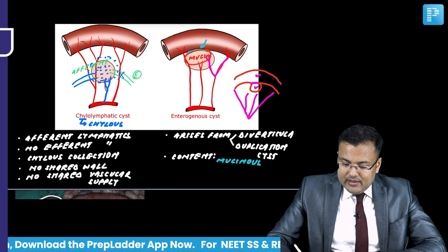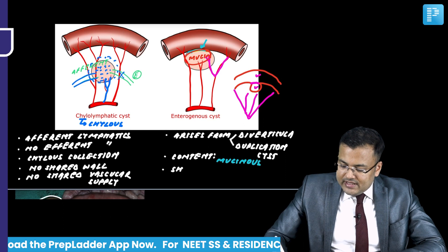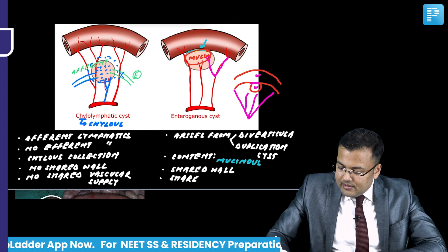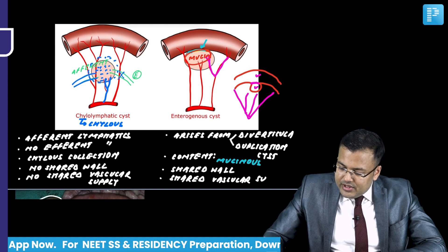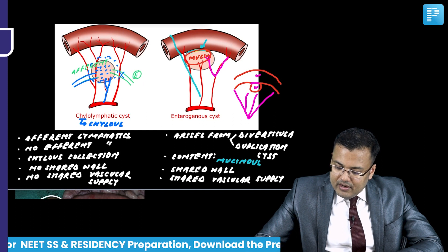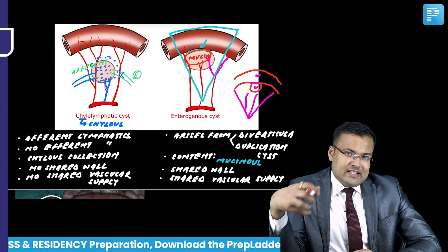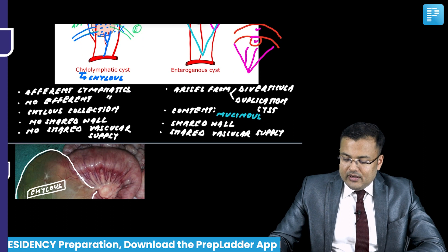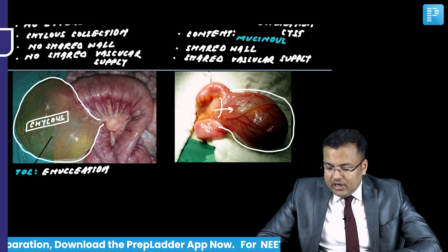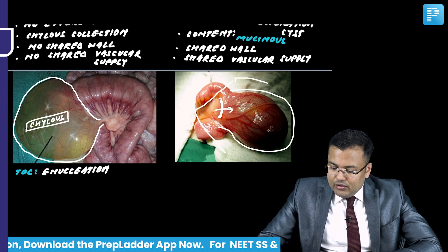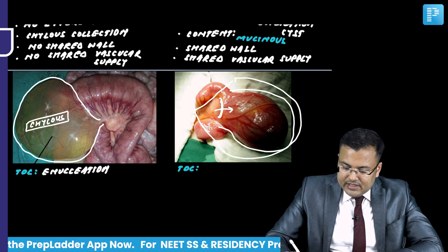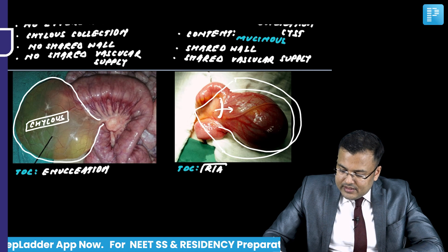Since there is shared wall and shared vascular supply in enterogenous cyst, the treatment is resection and anastomosis. The segment of bowel containing the cyst is also excised. So the treatment of choice for enterogenous cyst is resection and anastomosis.